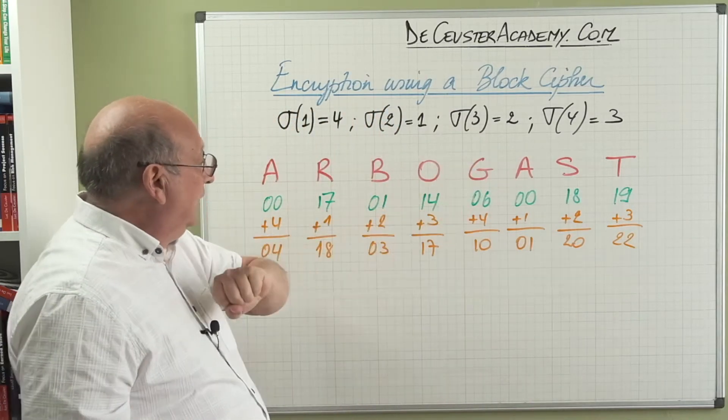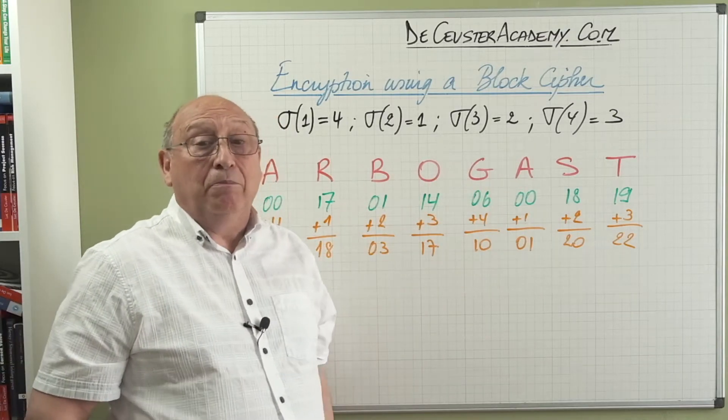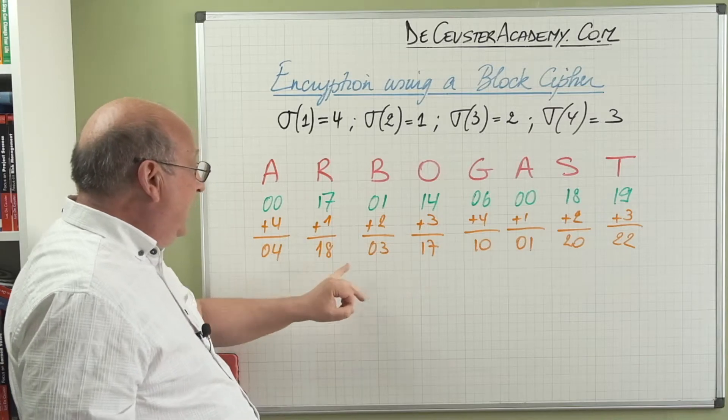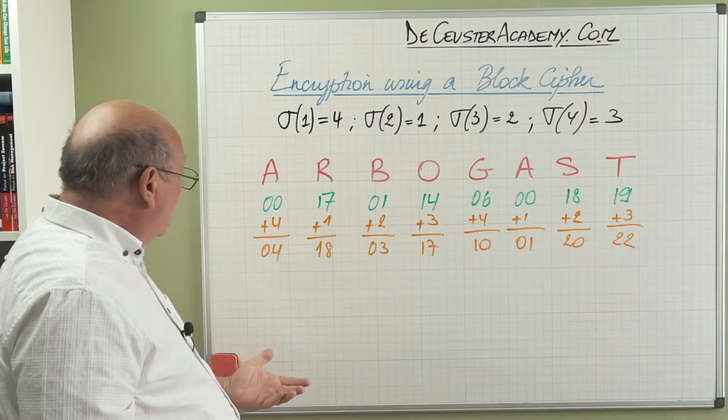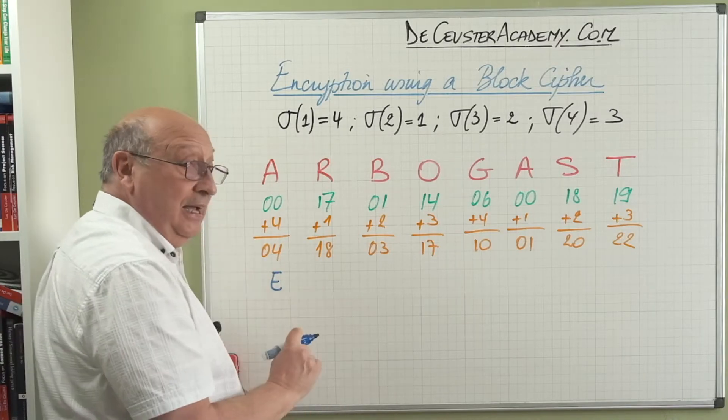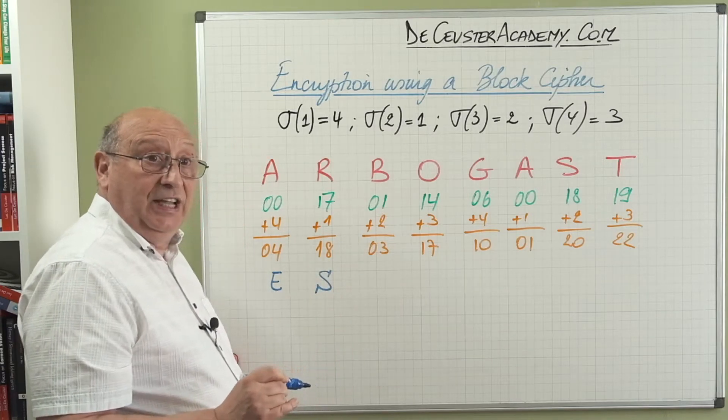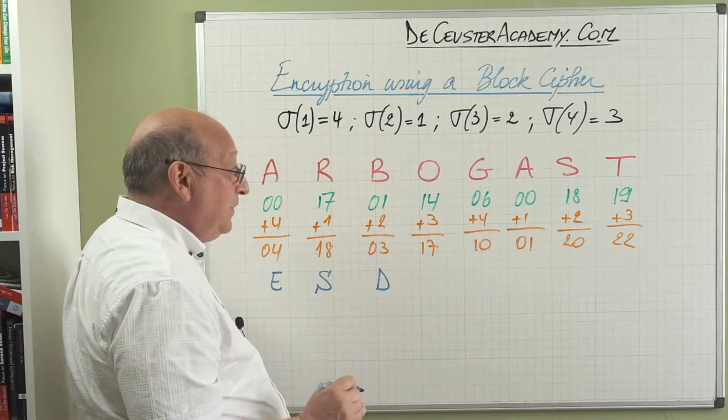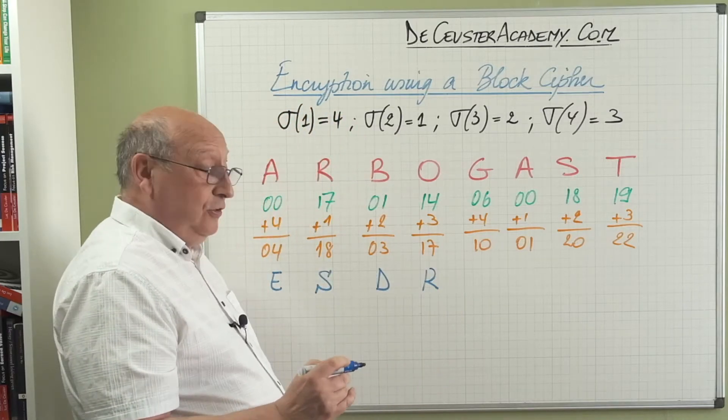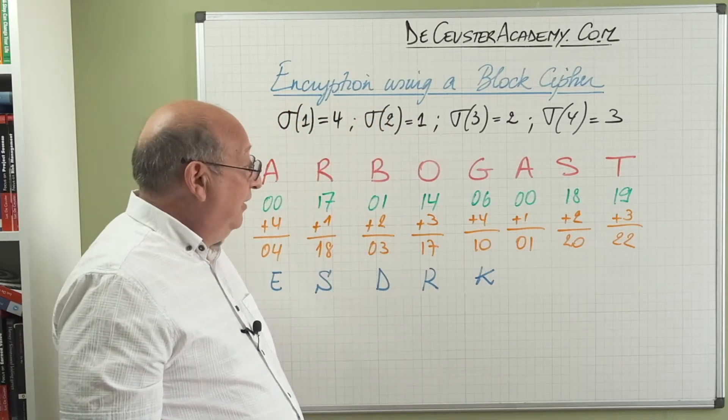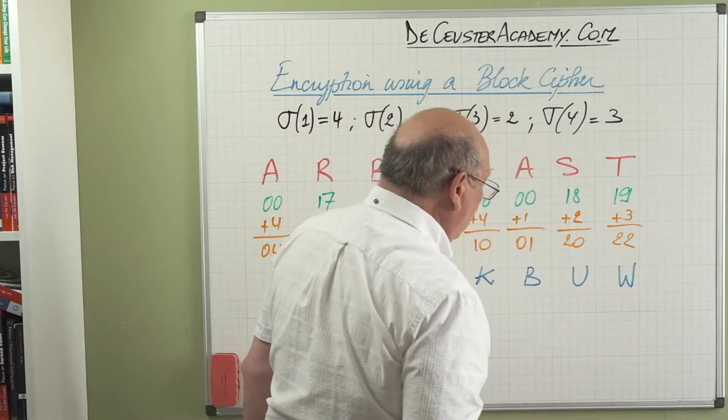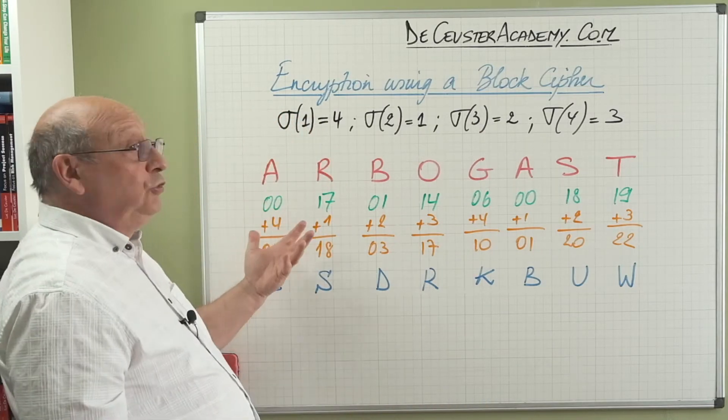So based on this, we have the original message. We identified the code numbers corresponding with the letters, and then we added those different values. So we finally get zero four, 18, zero three, 17, and so on. And now we look again in the table and we say what are the corresponding letters with these numbers. So we find E, then 18 corresponds with S, three corresponds with D, then 17 corresponds with R. Then we have 10, which corresponds with K, then we have zero one, that's easy, it's B, then we have 20, which is U, and then we have W.